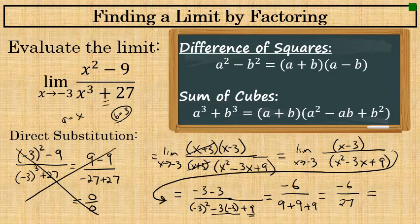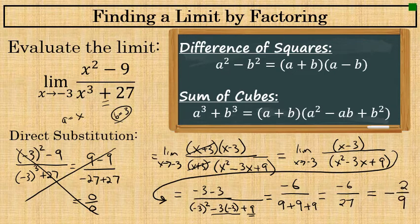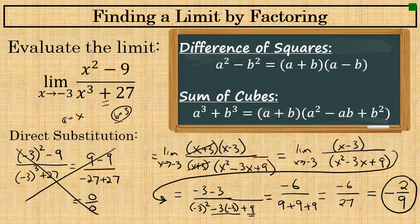Negative 6 and 27 are both divisible by 3, so in lowest terms negative 6 over 27 simplifies to negative 2 over 9. The limit as x approaches negative 3 of x squared minus 9 over x to the third plus 27 is negative 2 ninths.